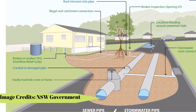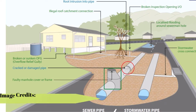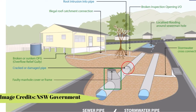This is an example layout of a sewer and stormwater collection system provided by the NSW government. The layout shows the ruptures and cracks that are observed in a sewer system as well as a stormwater system. Here, this layout is used to explain the general layout of manholes in a sewer or stormwater system.